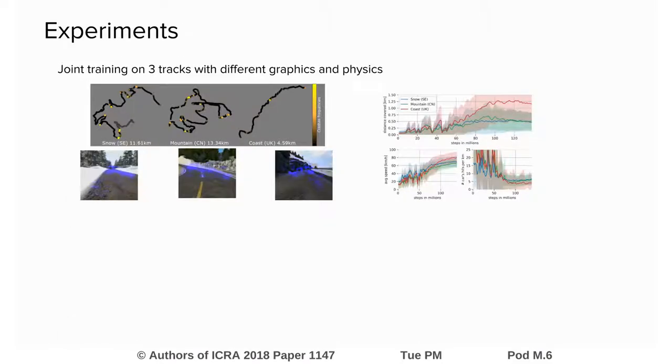We train jointly on three tracks with different graphics and physics, for instance with varying road adherences. The agents successfully learn to drive on all tracks, and performance can be seen in the track outlines.